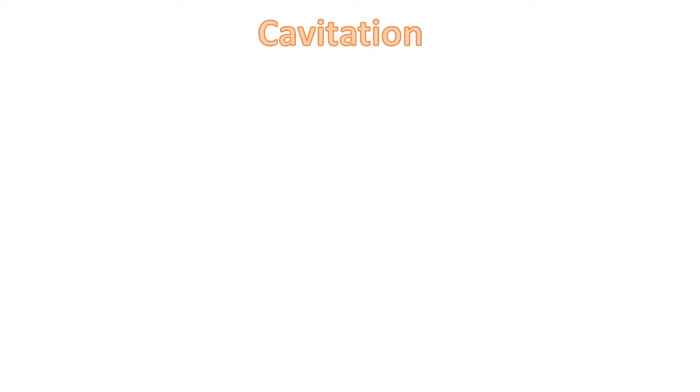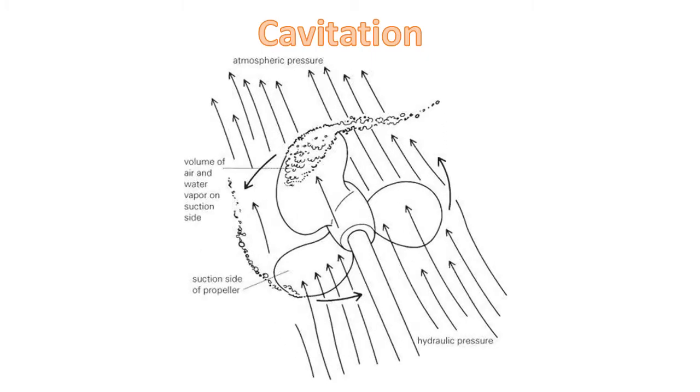Cavitation occurs when vapor bubbles form ahead of the pump impeller due to pressure drop in the pumping system. As the bubbles enter the pump and are swept along the impeller vanes, they implode due to a rising external pressure around the bubble.